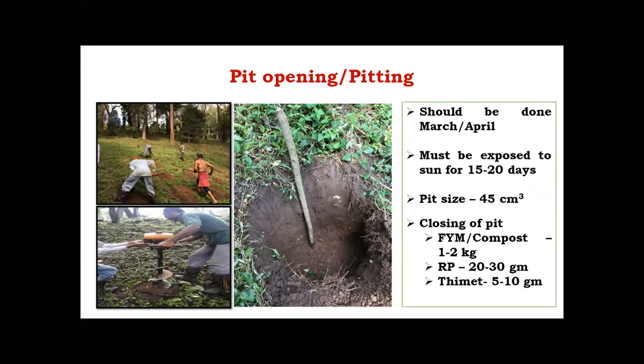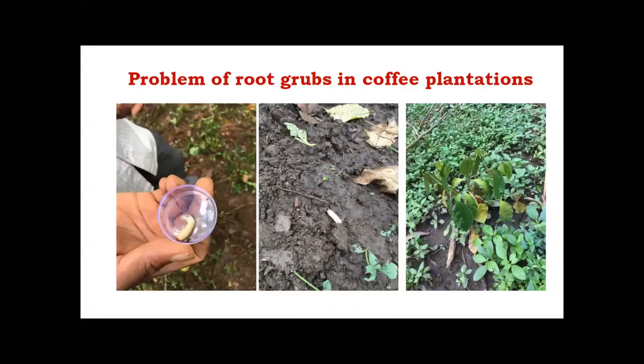Along with raw phosphate, Thimet is recommended at 5 to 10 grams per pit. Thimet is recommended because we are noticing problems in the field — root-feeding insects such as root grubs, also called crop choppers, and other root-feeding insects can damage coffee plants during initial planting. Therefore, Thimet is very essential to maintain the health of the plants.